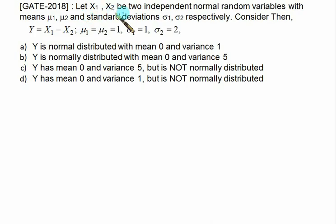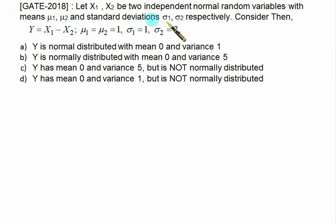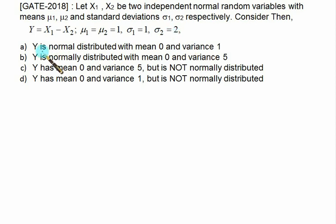Let x1 and x2 be independent normal random variables with means mu1 and mu2 and standard deviations sigma1 and sigma2 respectively. We have y = x1 − x2, with mu1 = mu2 = 1, sigma1 = 1, and sigma2 = 2. We need to select the correct choice from the four options given.